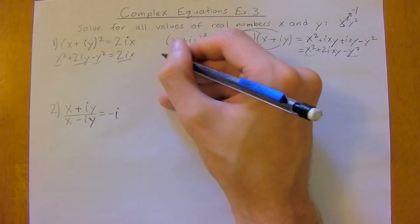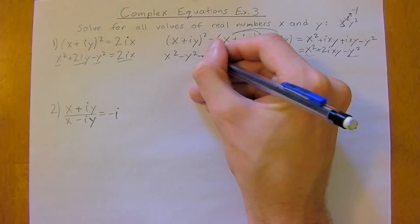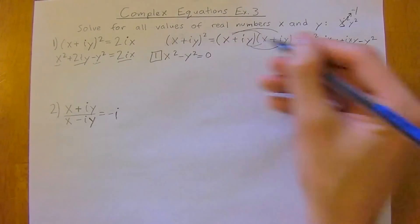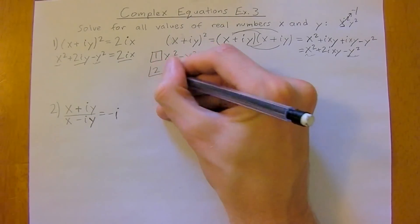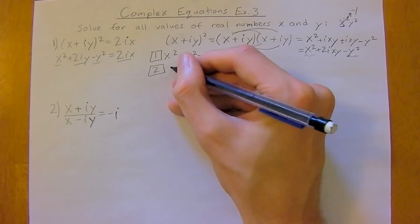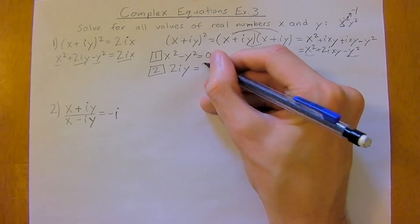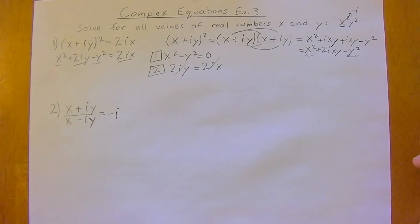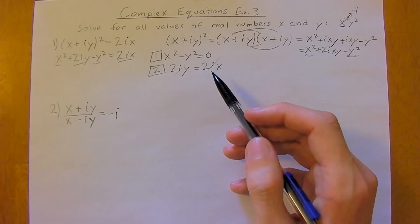We're going to group the real terms together and then group the imaginary terms together, and that's going to give us two equations. So we have X squared minus Y squared equals 0, which is equation 1. For equation 2, we will have the imaginary terms together: 2IXY equals 2IXY, and the I's are going to cancel.